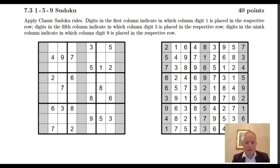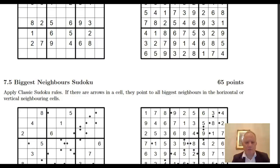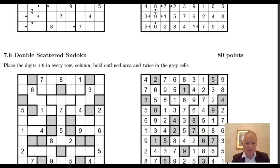Let's just have a look at some of the rules. The specials are a 1-5-9 Sudoku, disjoint groups - this is a bit of a classic style where no digit can appear in the same position in different three by three blocks. Biggest neighbors, I don't really know that one. We've got the double scattered there, this is the high tariff puzzle.